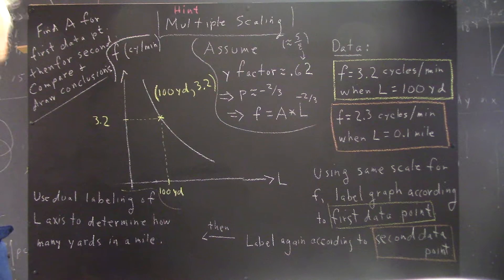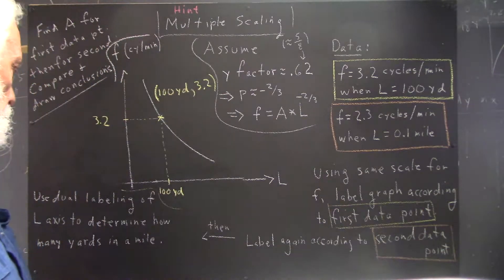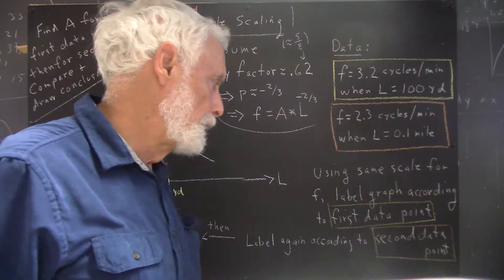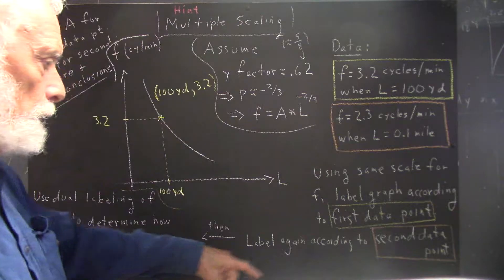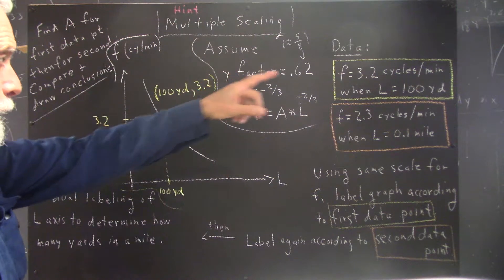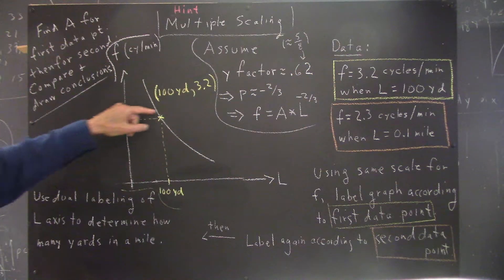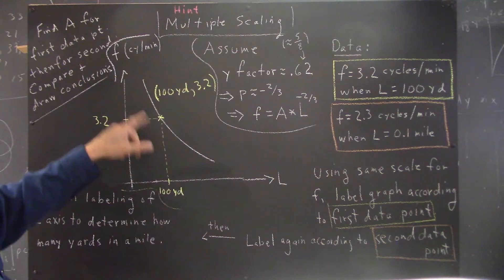Now I want to give you a hint in case you had difficulty with the original instructions. Remember that our first data point was 100 yards, 3.2 cycles per minute, this data point, and we labeled that on our graph and projected down here we got 100 yards.